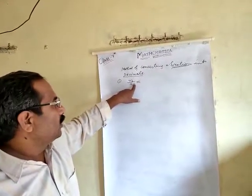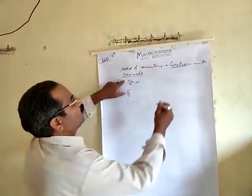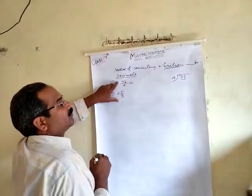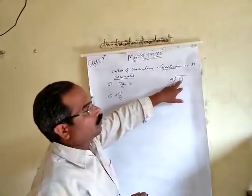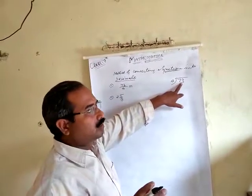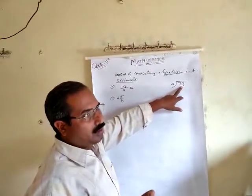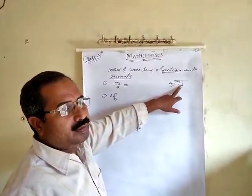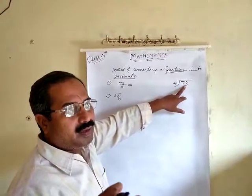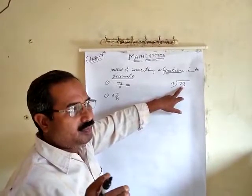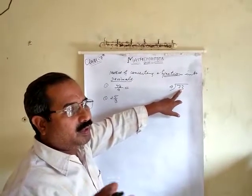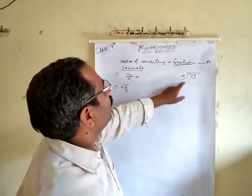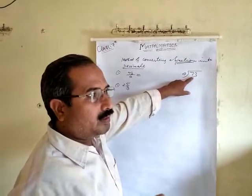I want to tell you the easiest method: you should divide the numerator by the denominator. If it is perfectly divisible by 4, there is no confusion. But if it is not divisible properly, you should take the answer after two places of decimal, after the decimal point. We should try to see if it is perfectly divisible or not.